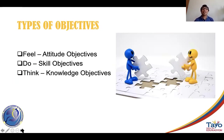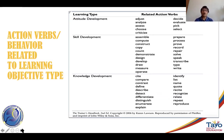We have three types of objectives: feel or attitude objectives, do or skill objectives, and think or knowledge objectives. 'Feel' refers to attitude and feeling; 'do' refers to what the participant should be able to do; and 'think' refers to knowledge and mental processes. Karen Lawson, in her Trainer's Handbook second edition, provides a matrix of related action verbs associated with certain learning types.